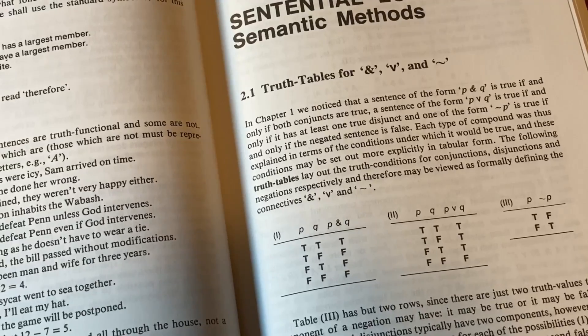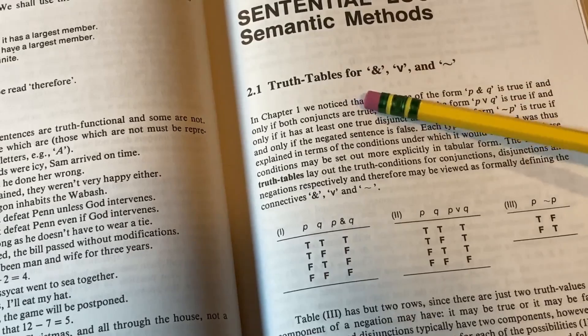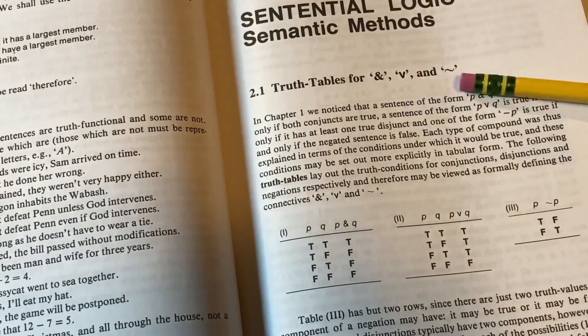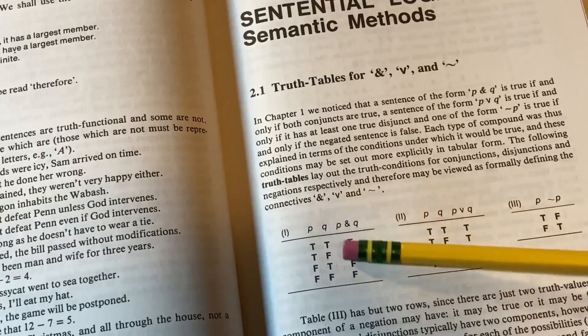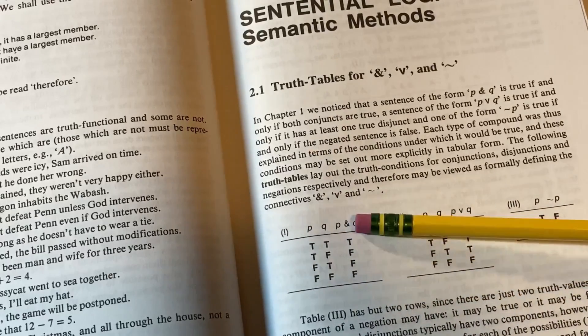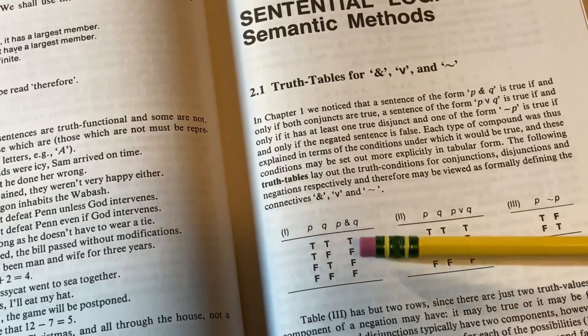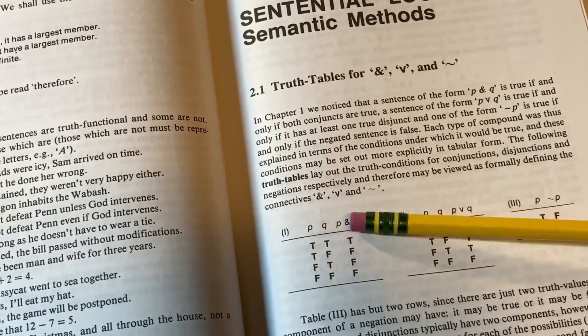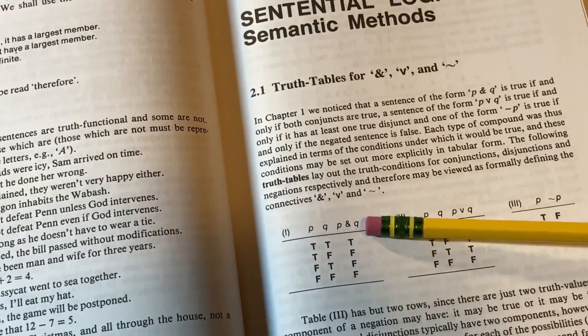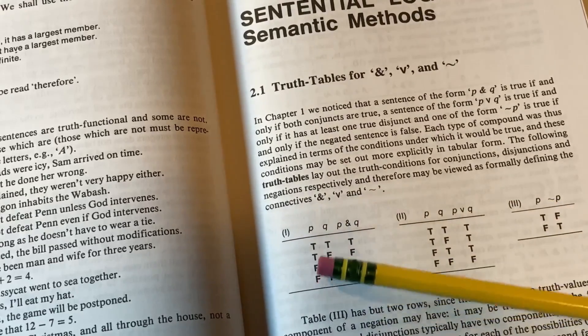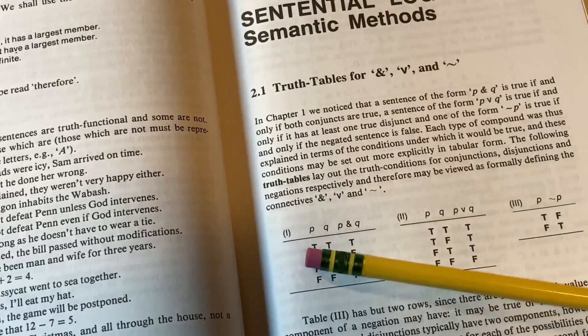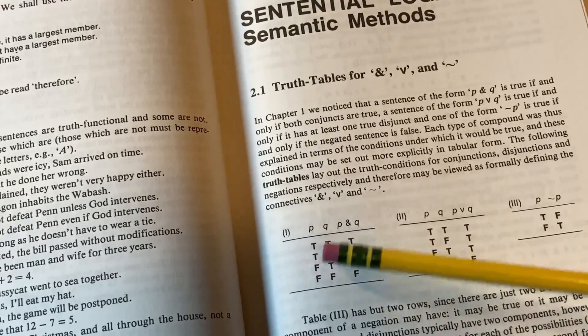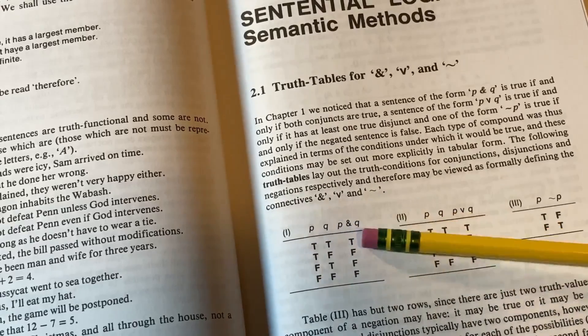Let's look at some truth tables. So here we have truth tables for and, or, and not. So how this works is you have a column for P, a column for Q, and then a column for P and Q. And then here it tells you here P and Q is true, false, false, false. So a statement like P and Q is only going to be true when they're both true. As you can see here from the truth table, in the first row, we have P is true, Q is true. And so when they're both true, that's when P and Q is true.